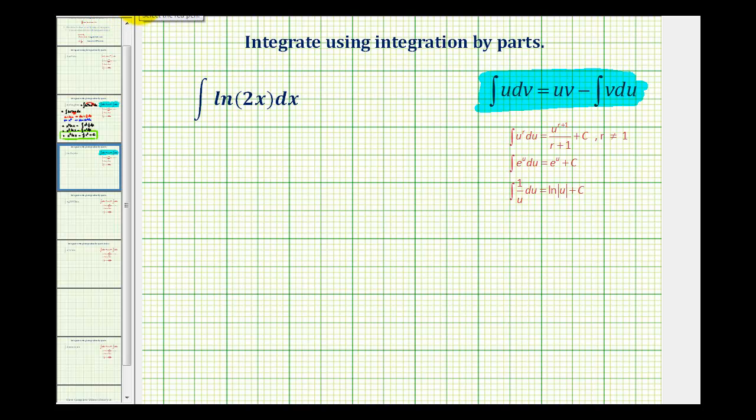I mentioned in the previous video that whenever the natural log function is involved, we want to let u equal the natural log. So for this integral, we'll let u equal natural log 2x. Another reason is that the natural log function isn't easy to integrate, so we don't want to let it equal dv.